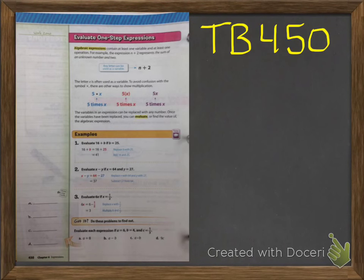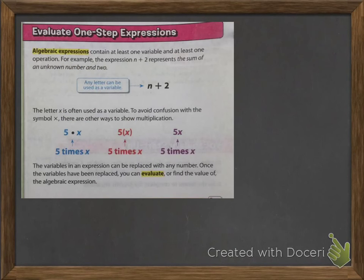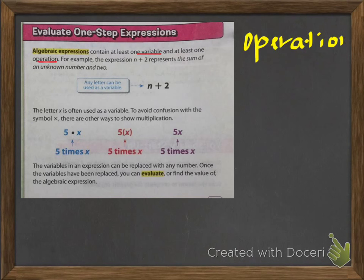Now we're looking at textbook page 450 — you should be able to see 'Evaluate One-Step Expressions' at the top. Algebraic expressions contain at least one variable and at least one operation. An operation is going to be multiplying, dividing, adding, or subtracting — you don't want to forget that.